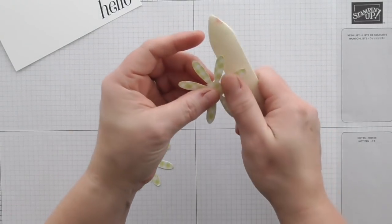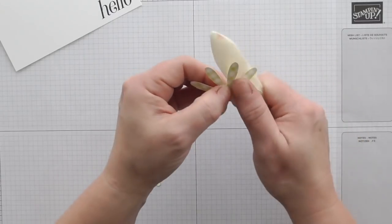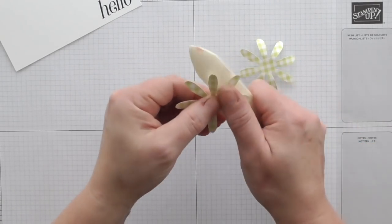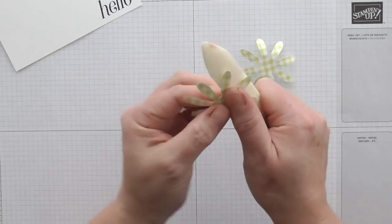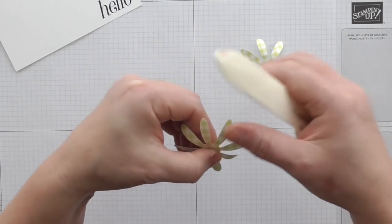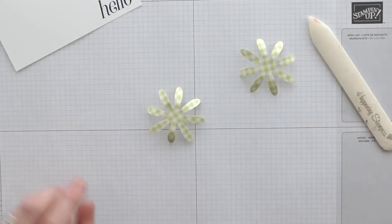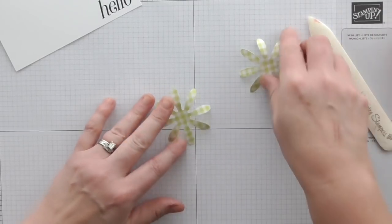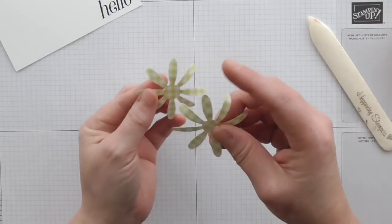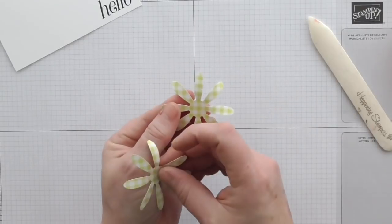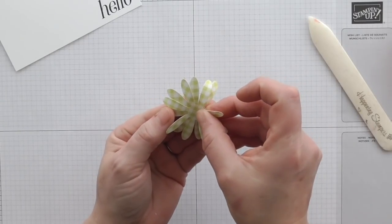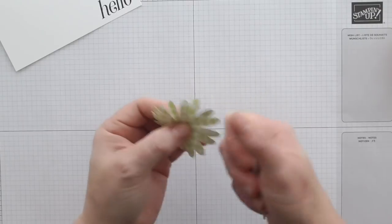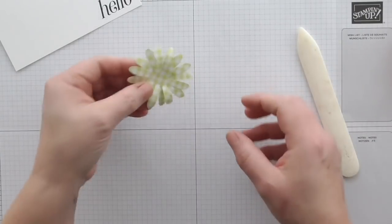So I have it running top to bottom and then just using my bone folder I just gently curl those leaves. We're not going for a realistic looking flower, flowers aren't gingham so you don't need to spend loads of time curling the leaves and giving them loads of dimension because I don't want them to look realistic, they're just fun and bright.